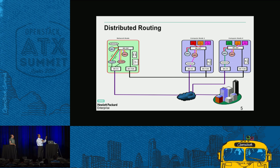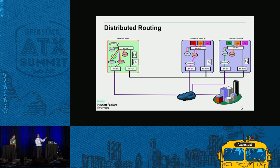The SNAT namespace is kept only in the network node where it is required, and the floating IP namespace is kept in the compute nodes. The L3 agent can operate in two modes: DVR SNAT mode (for nodes needing SNAT) and DVR mode (for compute nodes). Legacy mode is also still available.